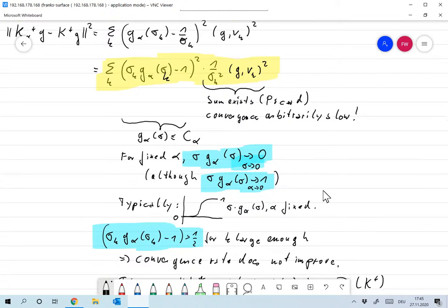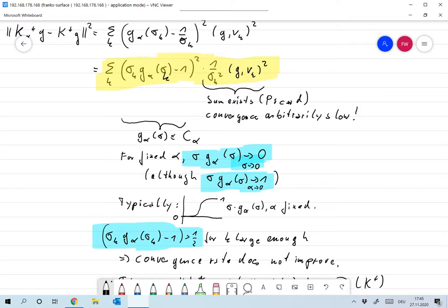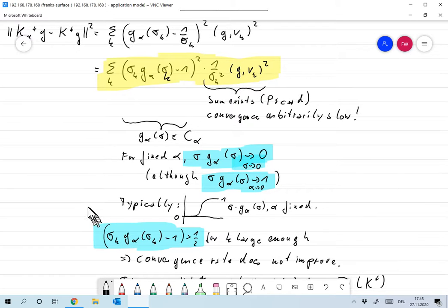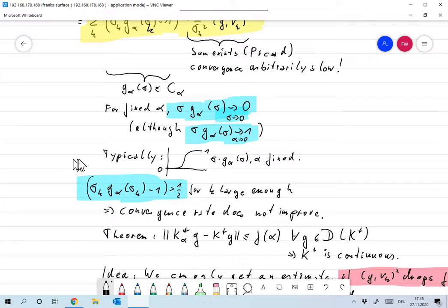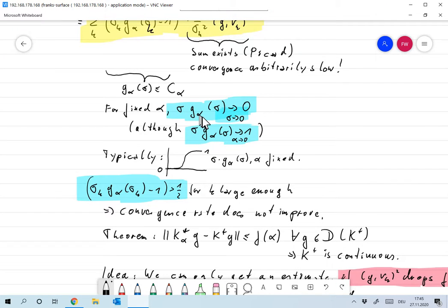Okay, yeah, that's bad. Oh, I just realized I wrote down a little bit more here. Let me do it this way. So for fixed alpha, as I said, sigma times G alpha of sigma goes to zero because G alpha is bounded for sigma going to zero. But if you, on the other hand, fix sigma, then of course, for alpha to zero, sigma times G alpha of sigma goes to one. That was one of our requirements for the convergence of these schemes.